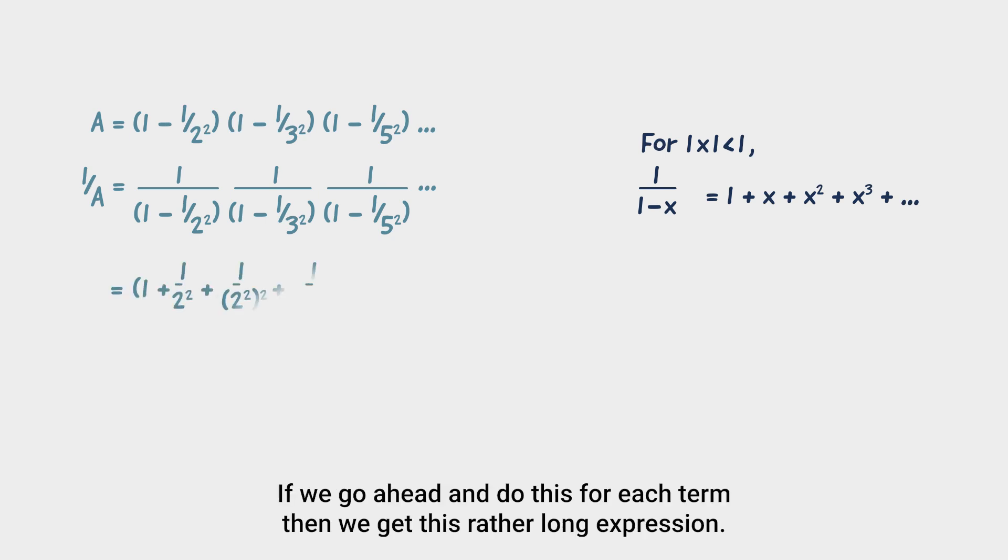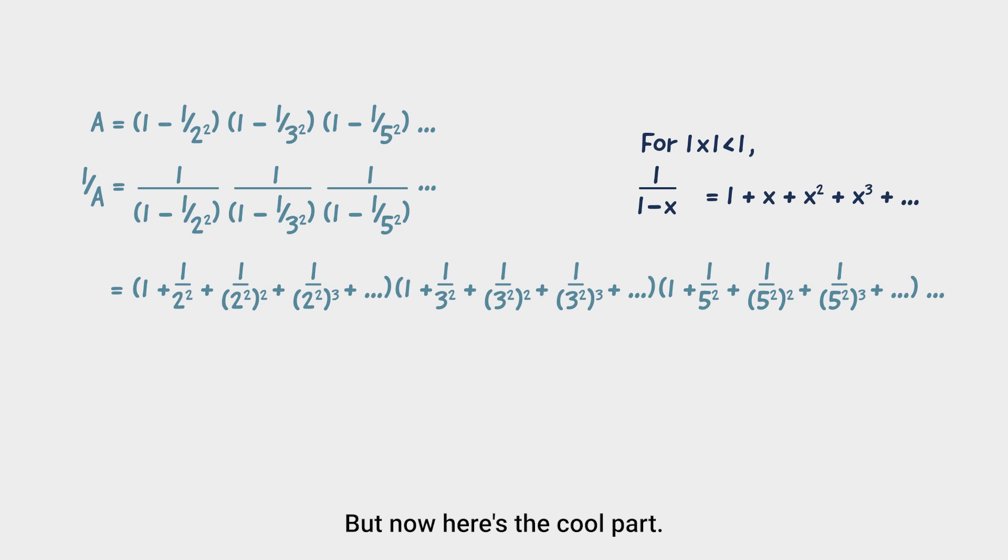For such expressions, we can use the well-known Taylor expansion. If we go ahead and do this for each term, then we get this rather long expression. But now, here's the cool part. If you expand all of this out, then by the fundamental theorem of arithmetic, you build each square number exactly once, which means that 1 over A is equal to 1 plus 1 on 2 squared plus 1 on 3 squared and so on.